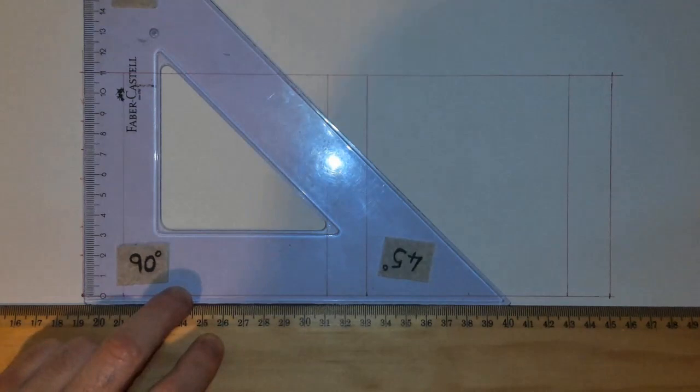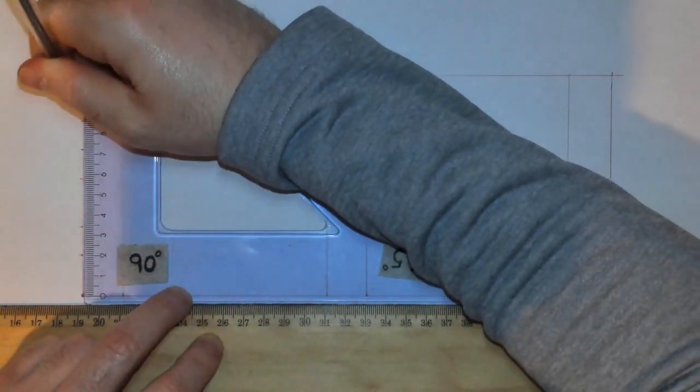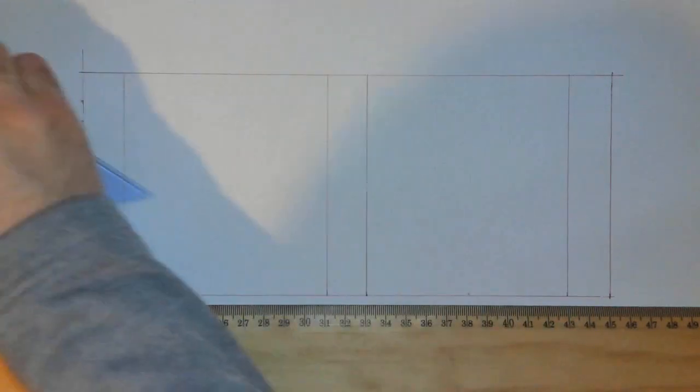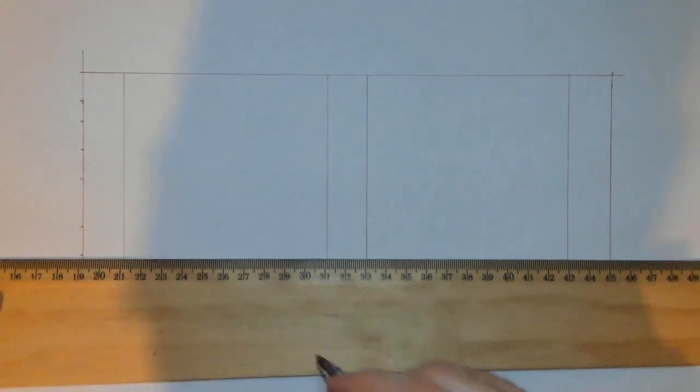And then 86 plus 10 is 96, and that leaves us 14 left over to 110. With all of those I'm now going to project lines across.